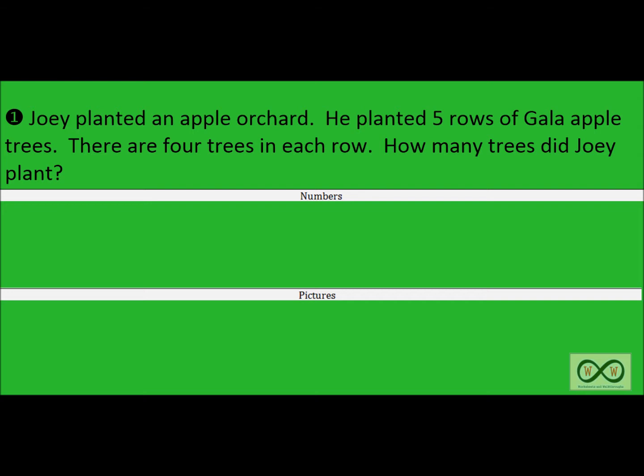Let's look at the first sentence: Joey planted an apple orchard. Is there any math information there? No, just story information. Let's move to the second sentence: He planted five rows of gala apple trees. Did you hear that? There are five rows — some important math information. Five rows of apple trees.